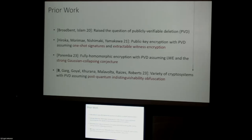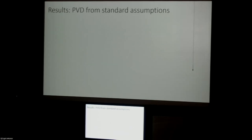The main result of this current work is to show that we can construct publicly verifiable deletion from standard assumptions. The first thing we do is prove Peremba's strong Gaussian collapsing conjecture. That establishes that his scheme, which is based on a very standard classical encryption scheme — dual Regev encryption — gives us encryption with publicly verifiable deletion from LWE.